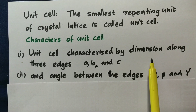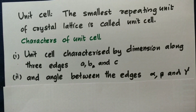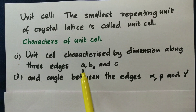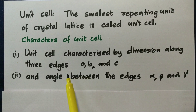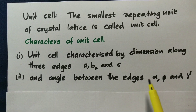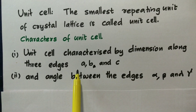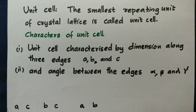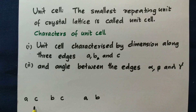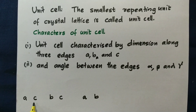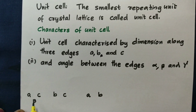Let us explain the dimensions. A unit cell is characterized by three lengths and three angles. If you have one length or one edge, you can see the angle between the edges. The angles between the edges are labeled alpha, beta, and gamma.